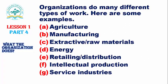Lesson 1, Part 4: What Organizations Do. Organizations do many different types of work. Here are some popular examples. Agriculture: producing and processing food. Manufacturing: organizations acquire raw materials and, by the application of labor and technology, turn them into products. Extractive: organizations are extracting and refining raw materials, like mining companies.